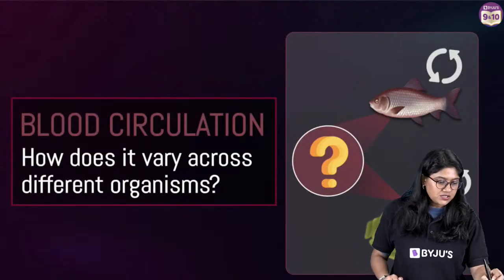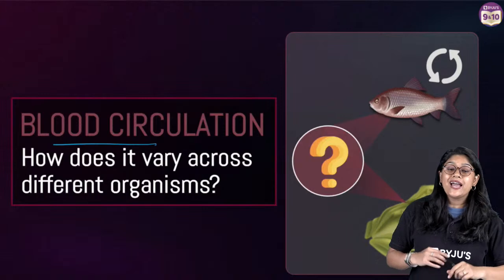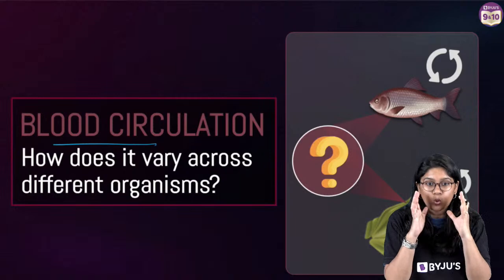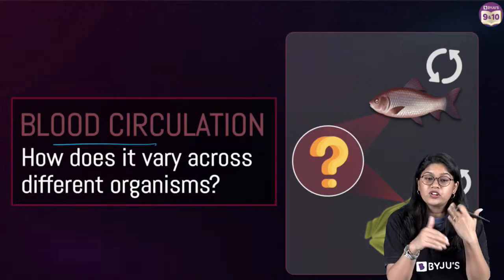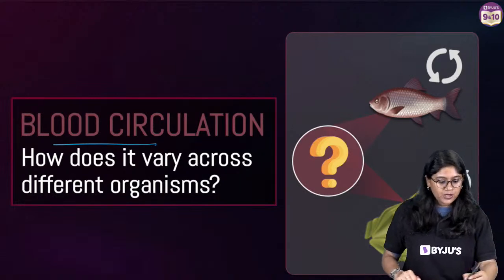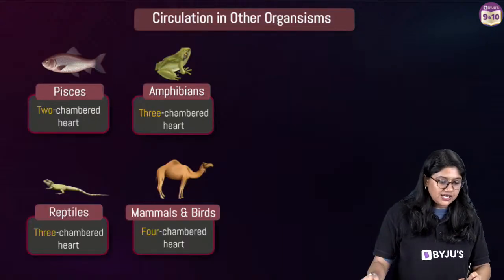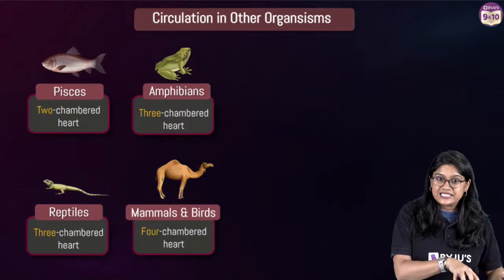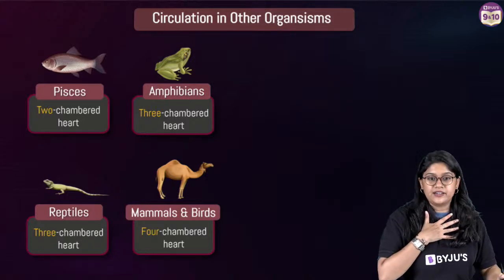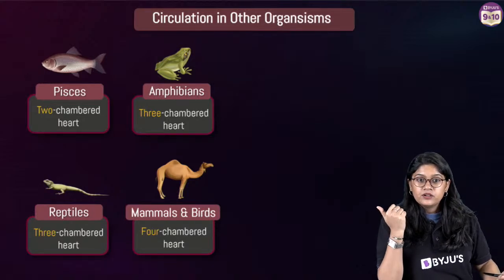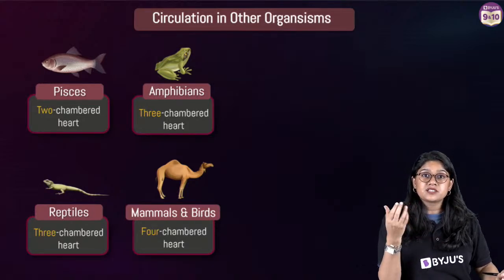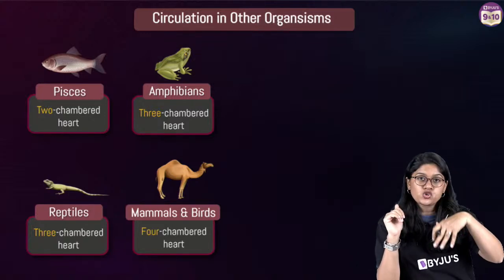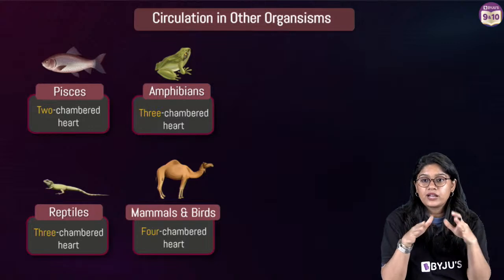Now let's quickly discuss blood circulation in other organisms. Single circulation happens in fish. Systemic circulation means the circulation happening from heart to the body. We have Pisces with two-chambered hearts, amphibians and reptiles with three-chambered hearts (exception: crocodiles with four-chambered hearts), and mammals with four-chambered hearts.